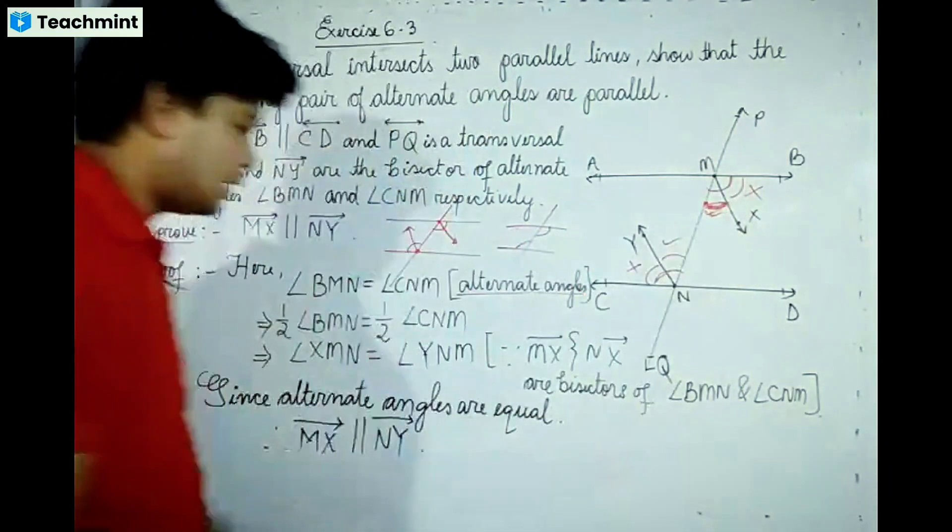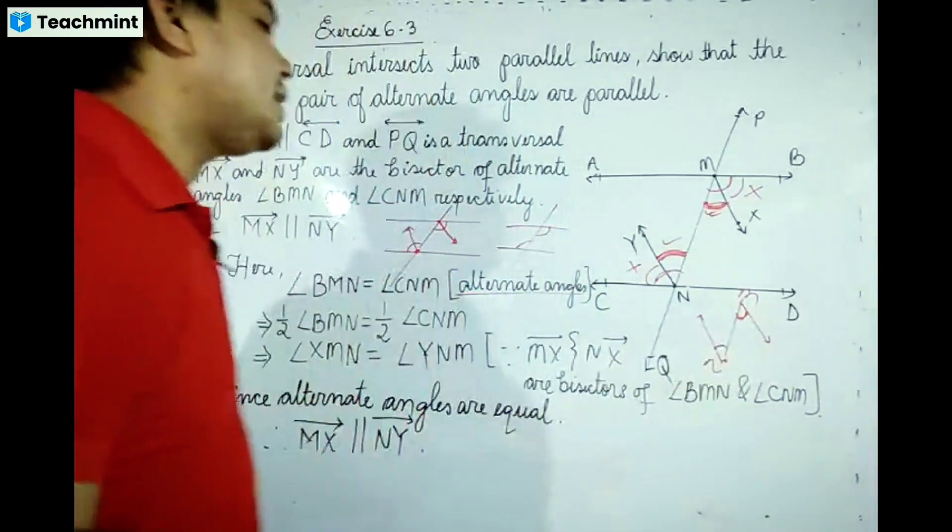Now angle XMN and angle YNM are alternate angles. Since these alternate angles are equal, this is a very important thing to note.